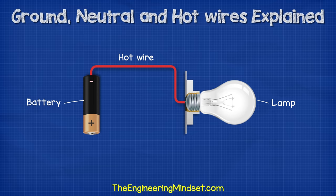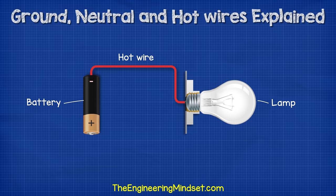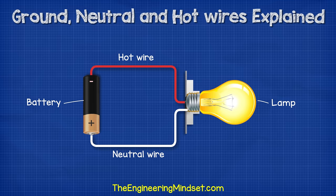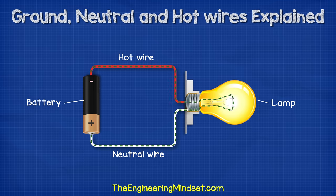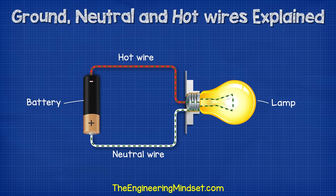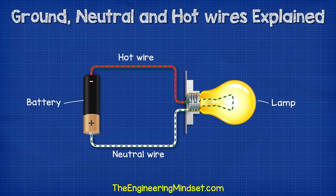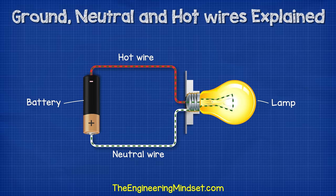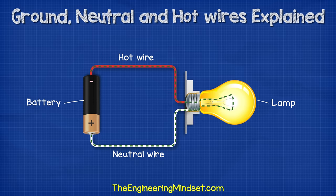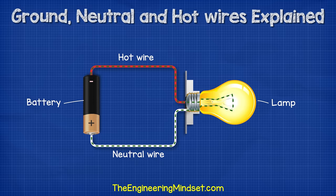This wire is our hot wire. Then we need to connect another wire from the lamp and back to the battery for the electrons to get back to their power supply — this wire is our neutral wire. The hot wire carries electricity from the power supply and takes it over to the load. The neutral wire carries the used electricity back to the power supply.